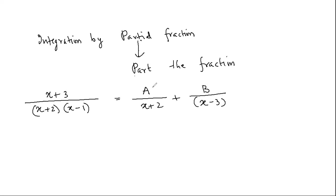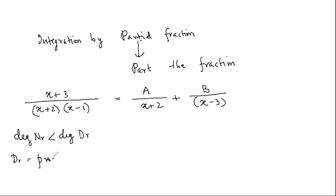What are A and B? The conditions for splitting such a rational function: the degree of the numerator should be less than the degree of the denominator, and the denominator should be a product of linear factors. If these two conditions are satisfied, then only can we split this way — otherwise we cannot.